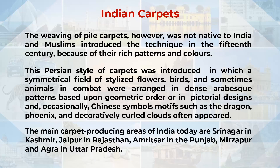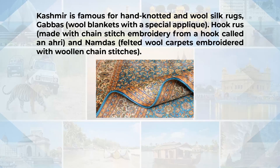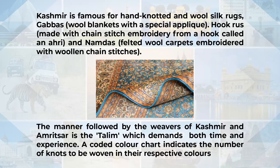The main carpet producing areas of India today are Srinagar in Kashmir, Jaipur in Rajasthan, Amritsar in the Punjab and Mirzapur in Agra in Uttar Pradesh. Kashmir is famous for hand-knotted wool and silk rugs. Gabas, woolen blankets with special applique work, are very popular. Namdas, which are felted wool carpets embroidered with woolen chain stitches, are also popular. The method followed by weavers of Kashmir and Amritsar is the talim, a coded color chart indicating the number of knots and their respective colors to the weaver.